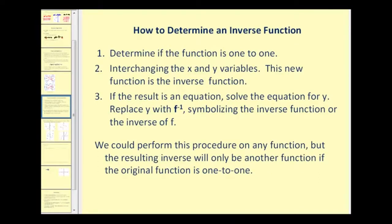Next, let's talk about how we determine an inverse function. First, we have to determine if the function is one-to-one. If it's not one-to-one, it will not have an inverse function. Step two: interchange the x and y variables — this new function is the inverse function. If the result is an equation, we need to solve the equation for y, then replace y with inverse function notation showing it's the inverse of f. The resulting inverse will only be another function if the original function is one-to-one.